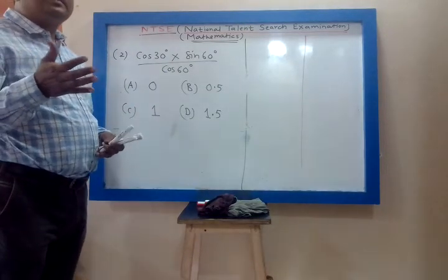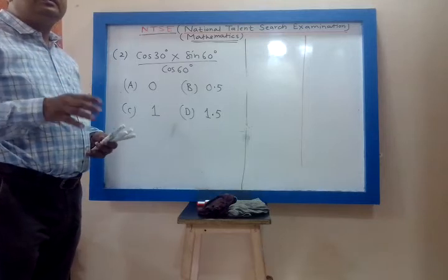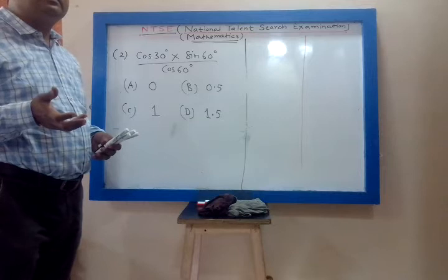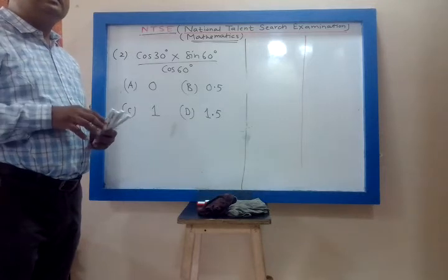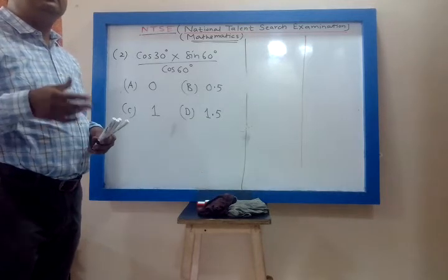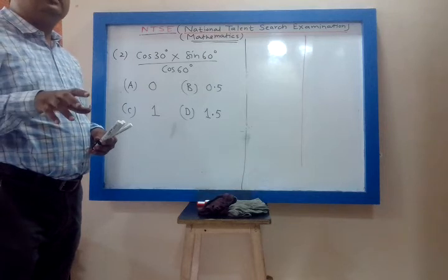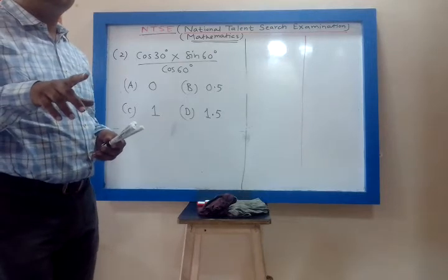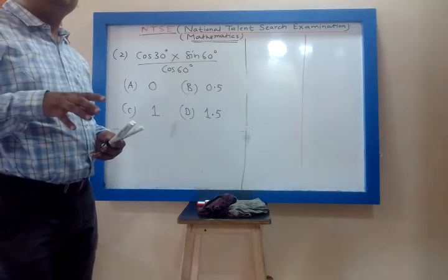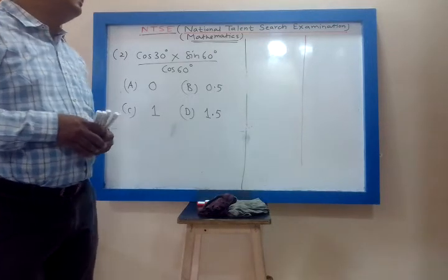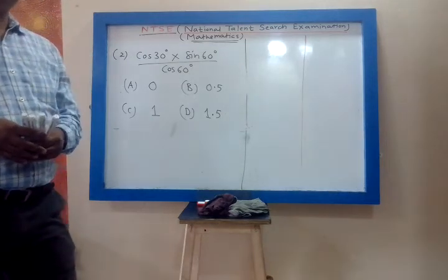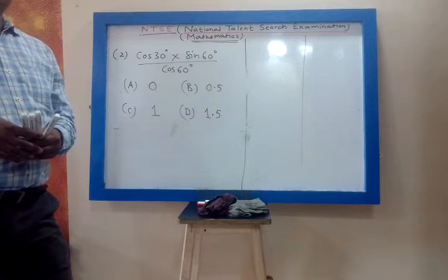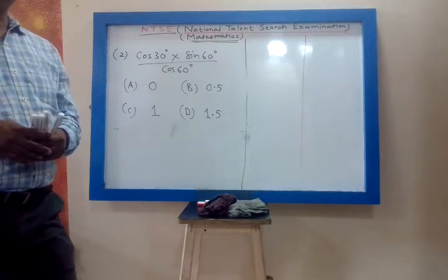From the table: sin 0 is 0, sin 30 is 1 by 2, sin 45 is 1 by root 2, sin 60 is root 3 by 2, sin 90 is 1. Cos 0 is 1, cos 30 is root 3 by 2, cos 45 is 1 by root 2, cos 60 is 1 by 2, cos 90 is 0.